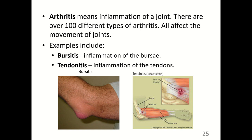Arthritis means the inflammation of a joint — 'arthro' meaning joint and 'itis' meaning inflammation. There are over a hundred different types of arthritis, and all affect the movement of the joints. Examples include bursitis, which is inflammation of the bursa, pictured in the bottom left, and tendinitis, which is inflammation of the tendons, pictured in the bottom right — also known as tennis elbow.